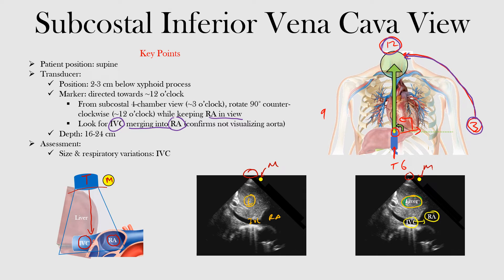Often the liver is sitting right in front as you image above it. The depth should stay about the same, around 16 to 24 centimeters. The IVC should be merging into the right atrium, and we assess the size and respiratory variations. This is where we look at the IVC to assess fluid status — whether a patient is fluid up or fluid down — and whether we need to diurese or give fluid.